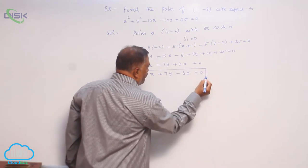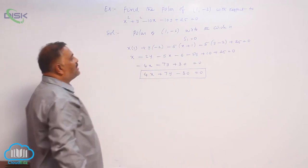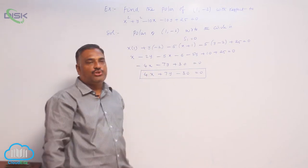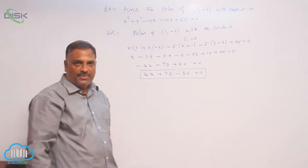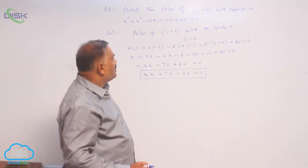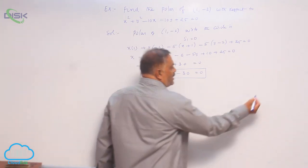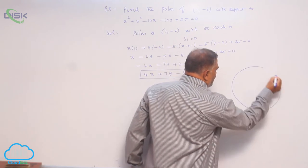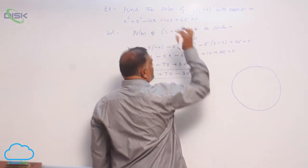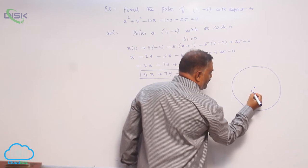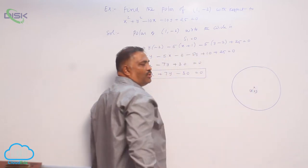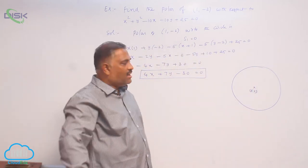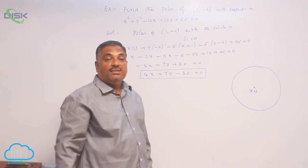This is the polar of the point 1 comma minus 2 with respect to the circle. Now I would like to tell you one point: if you take the circle equation as it is, you observe that center is given by 5 comma 5. As I told you, polar exists for any point but there is a restriction.